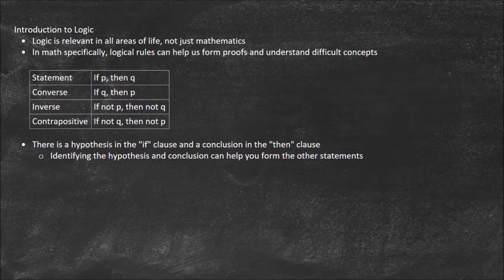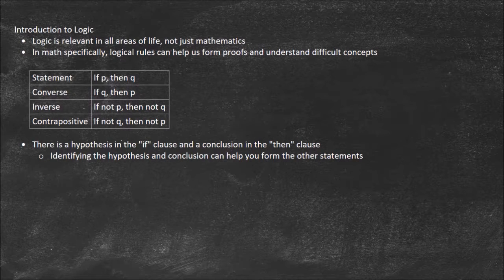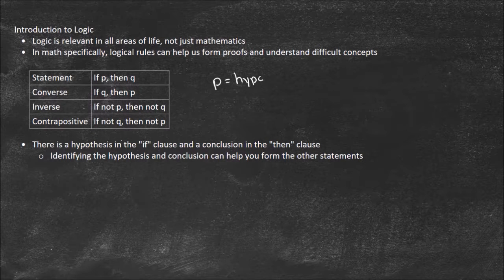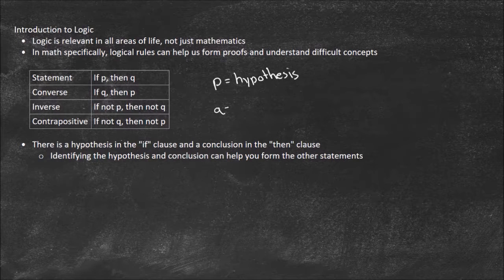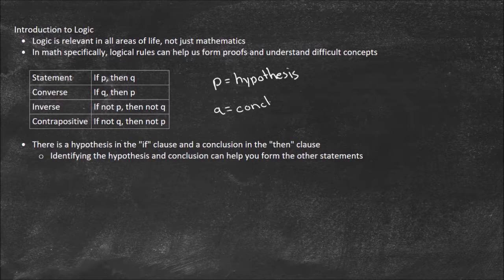First, I want to start with what logic is. It says: if P, then Q. What this means is, if X happens, then Y is going to happen. There's a hypothesis in the 'if' clause — so P is the hypothesis. That's essentially asking, what is going to happen? And then the 'then' clause, that's Q. If that first thing happens, what follows it? We call this the conclusion. So we're saying, if the hypothesis occurs, then the conclusion will occur.